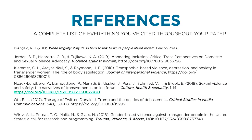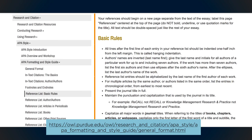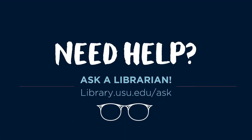At the end of your paper, you'd include a list of all of your complete citations titled References. When in doubt, you can find citation help on the APA website or from Purdue OWL. Or you can always ask a librarian.